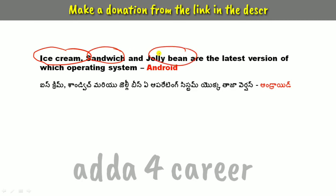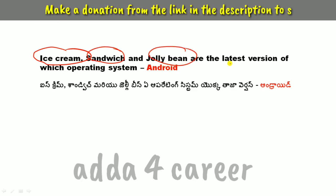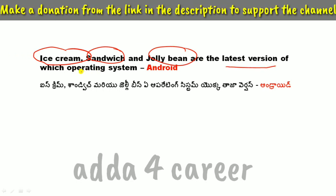Ice Cream Sandwich and Jelly Bean are versions of which operating system? These are versions of the Android operating system. In our mobile OS, Ice Cream Sandwich and Jelly Bean are well-known Android versions.